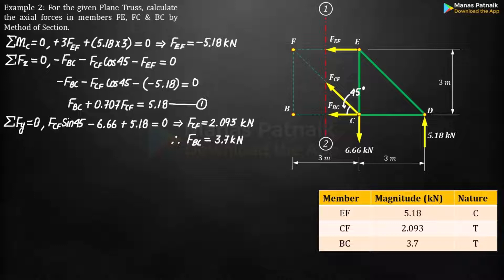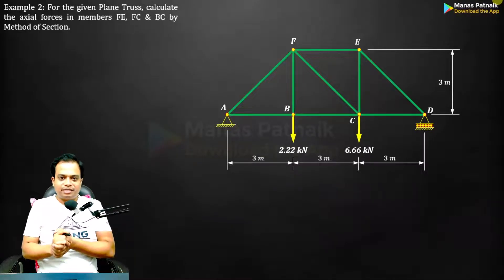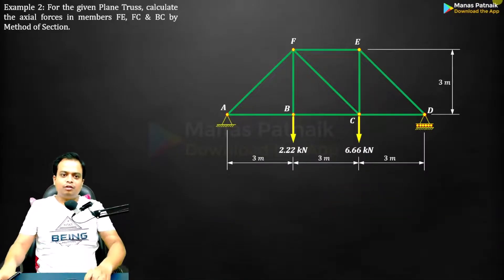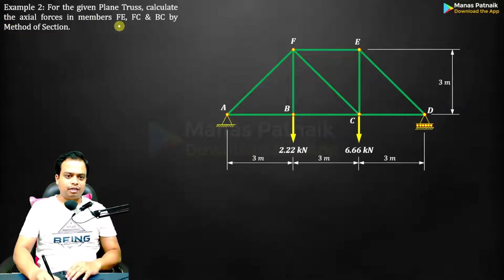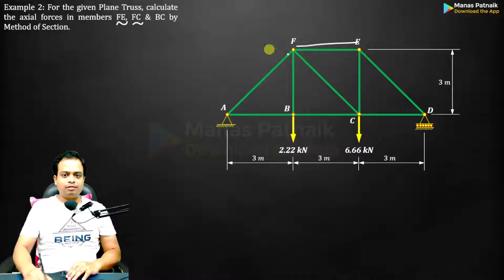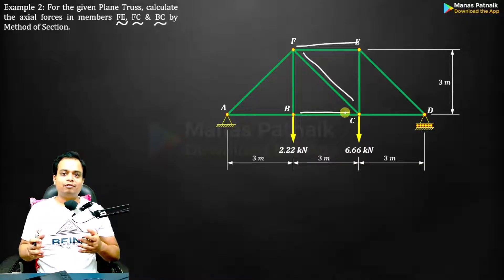Now let's explore this method with the help of an example. Okay, now let's start with example number two. For the given plane truss, calculate the axial forces in members FE, FC, and BC. So these are the three members where we will be calculating the forces.